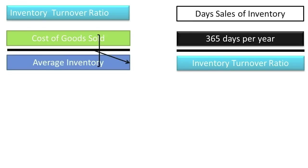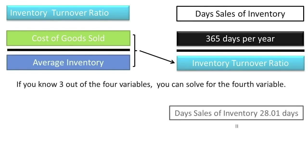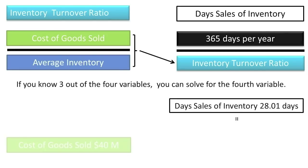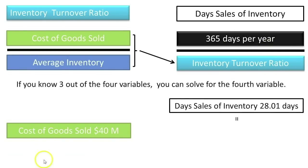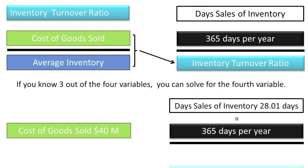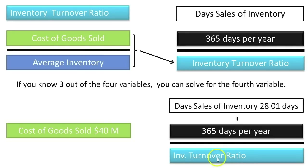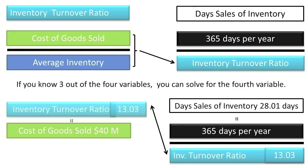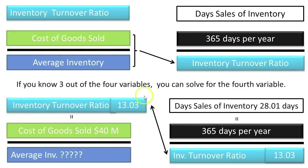Let's tie the inventory turnover ratio and the days' sales of inventory together to show that if you know 3 of the 4 variables, you can solve for the missing one. Assume NuCo has 28 days' sales of inventory and cost of goods sold of $40 million. We can find the inventory turnover ratio: 365 divided by 28 equals 13.03. Then, solving for average inventory: $40 million divided by 13.03 equals $3.07 million. You should be able to go either direction and solve for unknown variables.